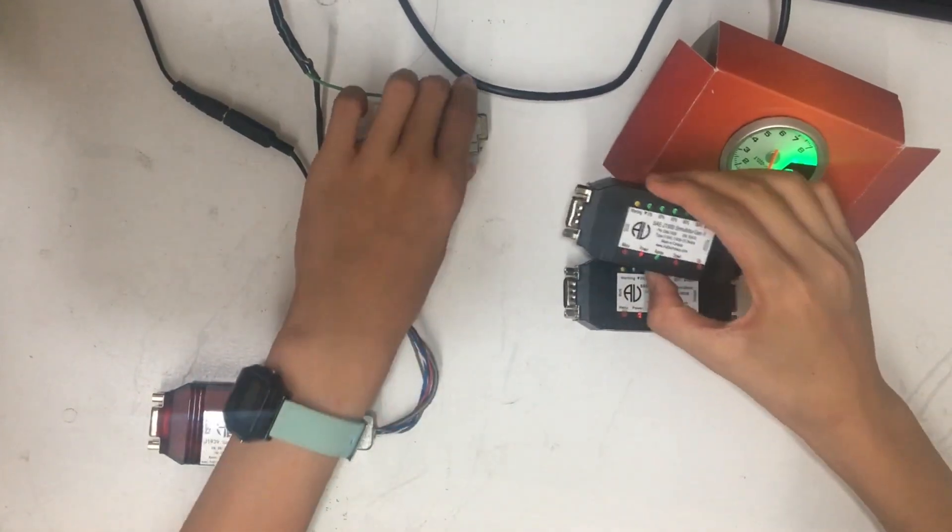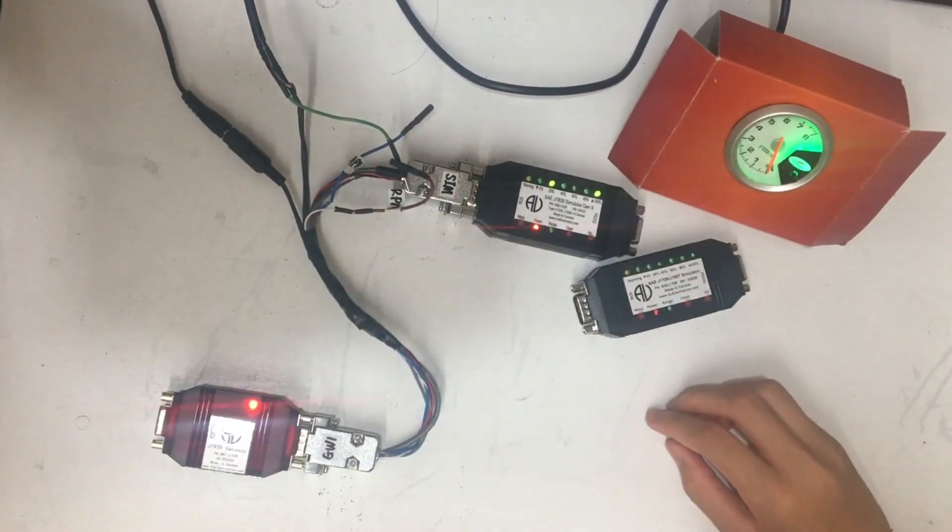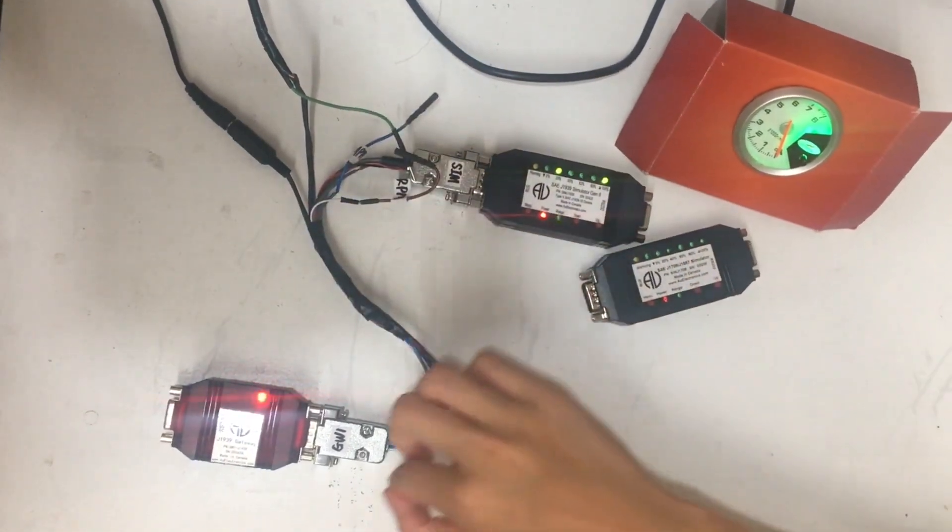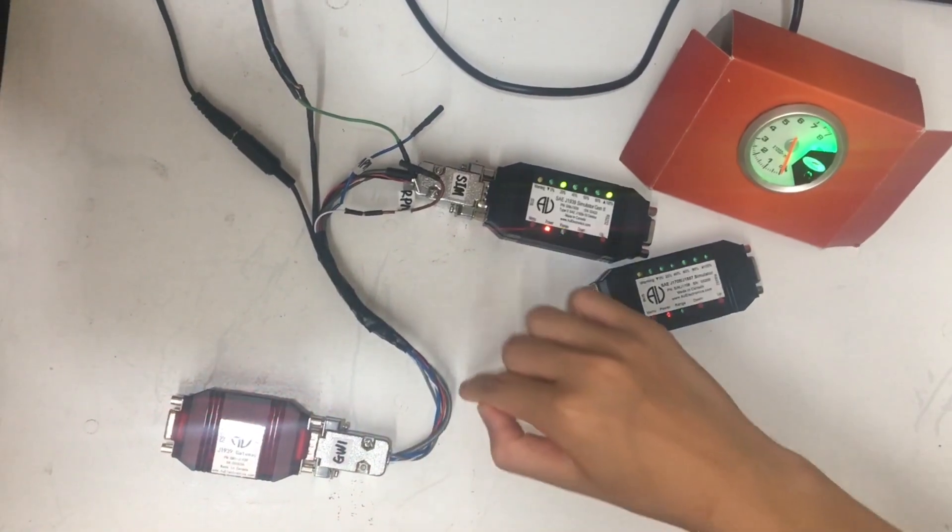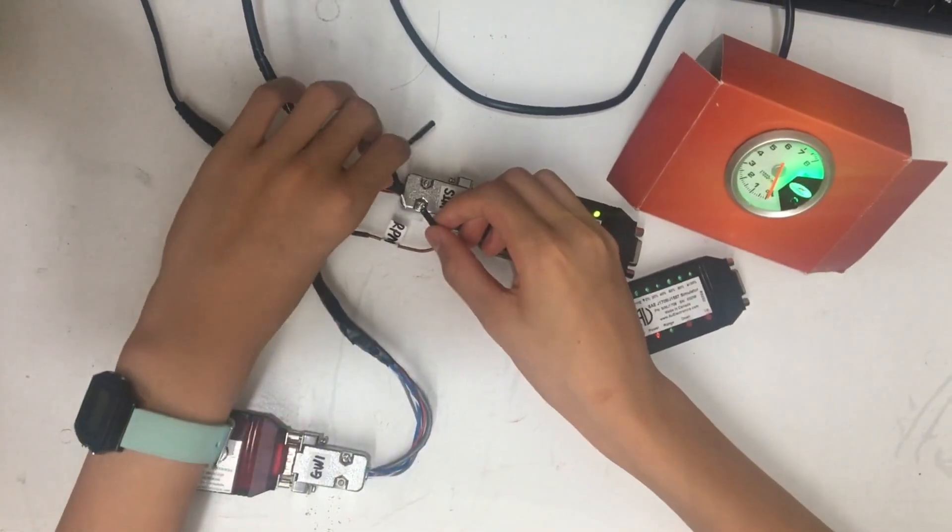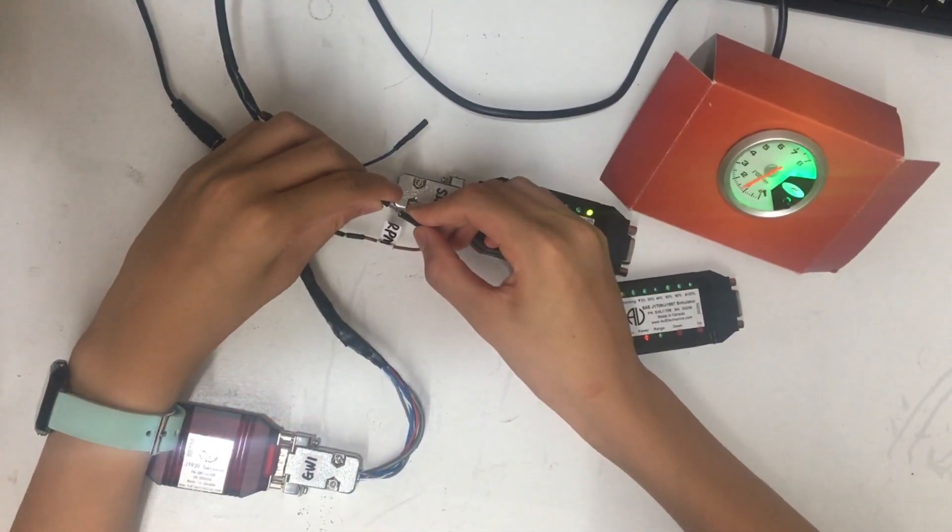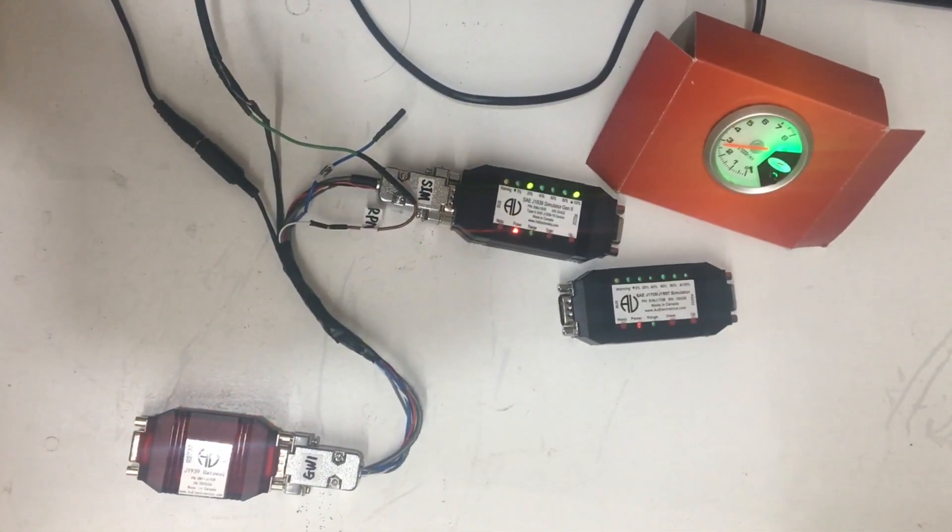Let's first try the J1939 simulator. Plugging it in returns no results on the gauge. Why not? The simulator is providing digital signals to the Gateway 1. In turn, the Gateway 1 converts the input to pulse signals which it sends to the tachometer. To see the reading on the gauge, we will need to connect the signal output wire to the gauge.